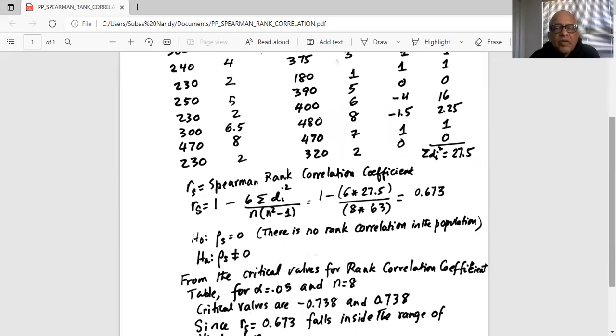The formula for Spearman rank correlation coefficient is RS equal to 1 minus 6, sum of the squares in differences, divided by n times n square minus 1. So our formula for RS becomes 1 minus 6, multiplied by sum of the squares in differences, which is 27.5 divided by n is 8, multiplied by 8 square minus 1, which is 64 minus 1, which is 63. So RS Spearman rank correlation coefficient is 0.673 from the sample data.